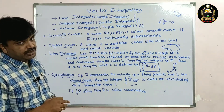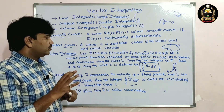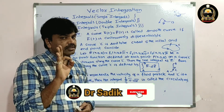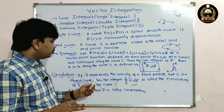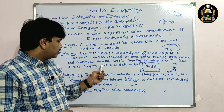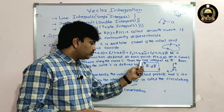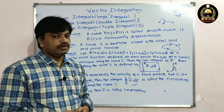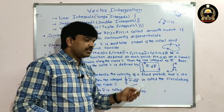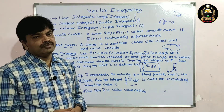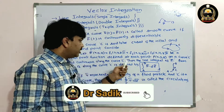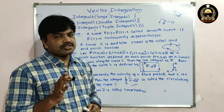f̄ is continuous along the curve C. Then the line integral of f̄ from A to B along the curve C is defined as the integral from A to B of f̄·dr̄.